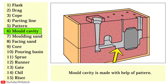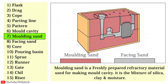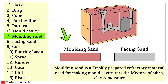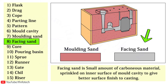The mould cavity is made with the help of the pattern. Moulding sand is a freshly prepared refractive material — it is a mixture of silica, clay, and moisture. Facing sand is a small amount of carbonaceous material sprinkled on the inner surface of the mould cavity to give better surface finish to the casting.